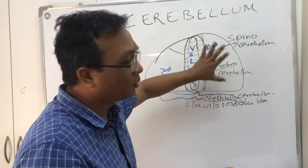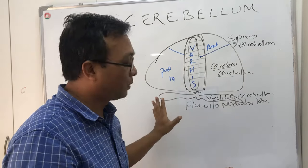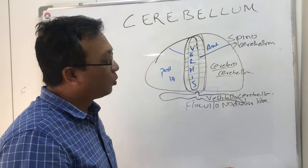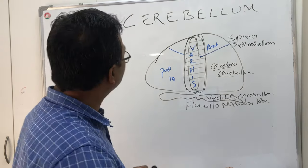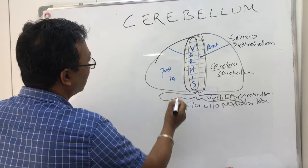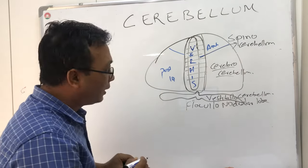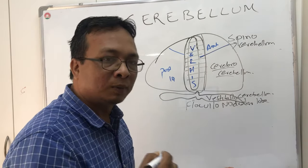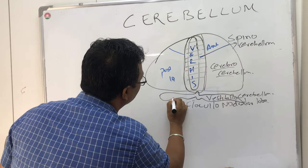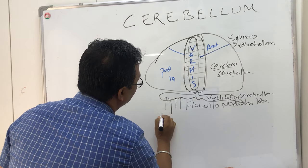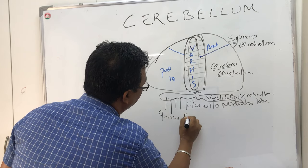What is the function of the cerebellum? The flocculonodular lobe gets lots of inputs from the inner ear. In the inner ear there are semi-circular canals, and inside these canals there is fluid.